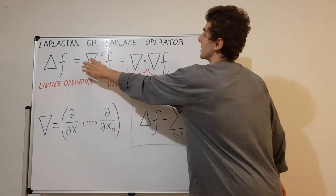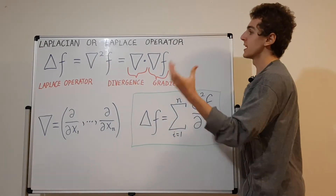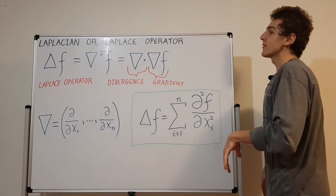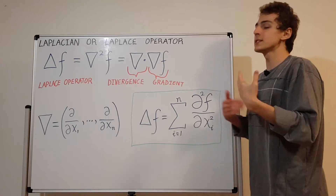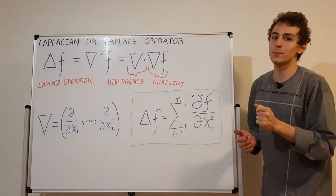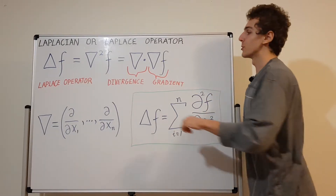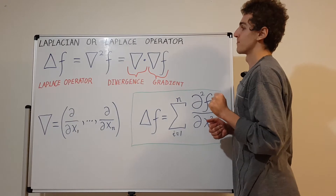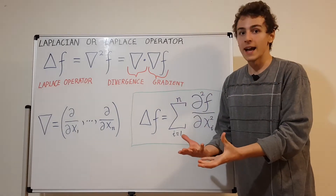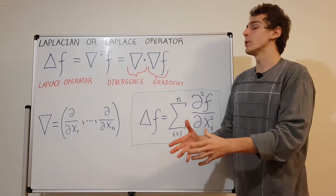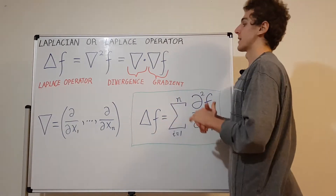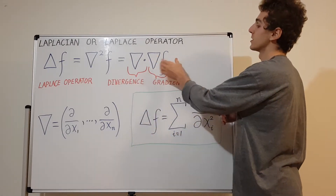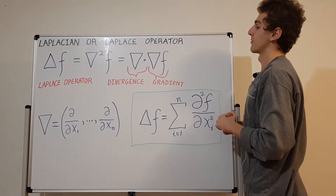I personally prefer the notation where you write a superscript 2 on the nabla or del operator — the upside-down triangle. You can think of it as almost applying the operator twice, but we're really taking the divergence of the gradient: we do the gradient first, then take the divergence of that.